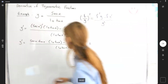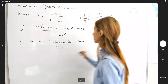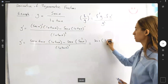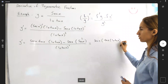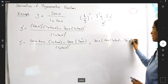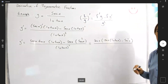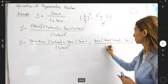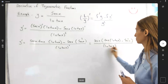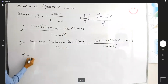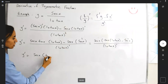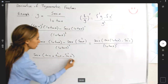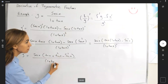For simplification, factor out secant of x, leaving secant of x times the quantity tangent of x times 1 plus tangent of x, minus secant squared of x. We're trying to create tangent squared and secant squared with subtraction next to each other, so that we can use the trig identity from pre-calculus. Expanding: y prime equals secant of x times tangent of x plus tangent squared of x minus secant squared of x, divided by 1 plus tangent of x to the second power.